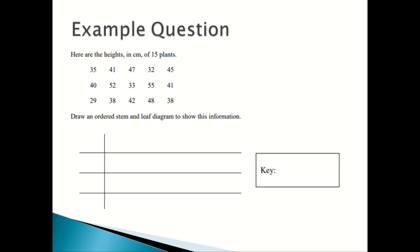So in this kind of question they will give you the drawing table. Sometimes they may not even give you the table. Sometimes you have to draw the table yourself, and they'll also give you a blank box for you to put the key. So you will start off your stem and leaf diagram by putting the first numbers on the left hand side of the diagram.